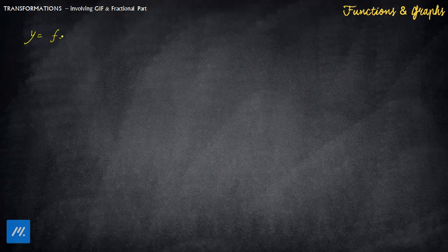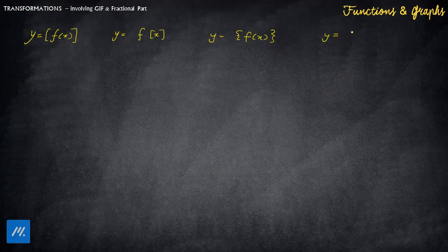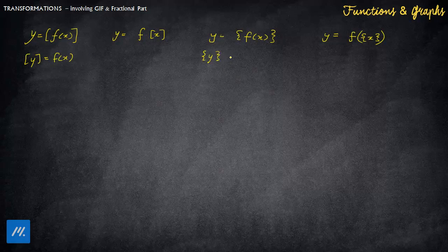Now let's take transformations which involve GIF and fractional part. There are basically four such transformations which we have to do — these are the four when f(x) is complete inside GIF. You can also have a similar thing for fractional part. These are the four famous transformations with regard to GIF and fractional part. You can also have two more of the form GIF(y) = f(x) and fractional part of y = f(x), which we generally do not tend to do as it goes out of scope. We are inclined to do the first four.